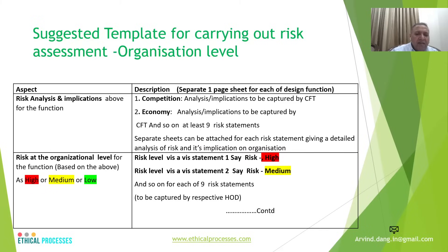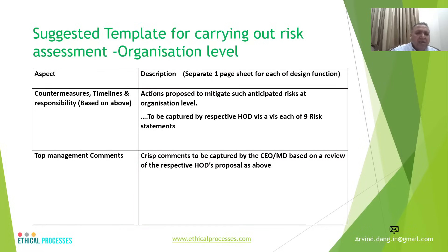Once this analysis has been done, based on the risk analysis carried out in the previous statements, HODs need to assign a risk level — this could be high risk, medium risk, or low risk, shown in different colors. Against each of the nine parameters, one has to capture whether the risk is high, medium, or low. Then the HODs also need to capture what actions are proposed to mitigate the risk for each of these nine statements.